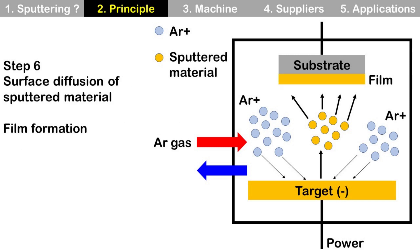Step 6: Surface diffusion of sputtered material and film formation. Target materials arrive at the substrate surface, go around and settle down, then finally form a thin film.